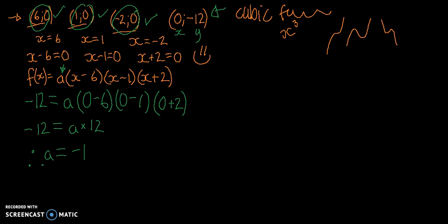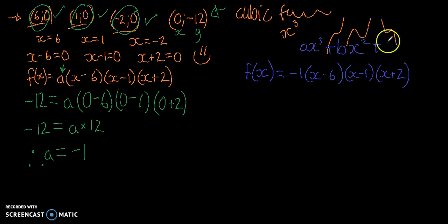I'm changing color because we're changing thought. So what we have now is our function is negative 1, x minus 6, x minus 1, and x plus 2. We now need to get it to the ax cubed plus bx squared plus cx plus d format. That means we've got to multiply these out.